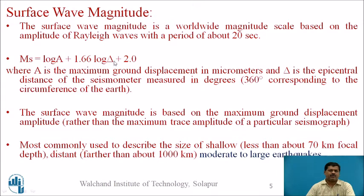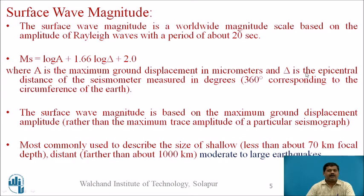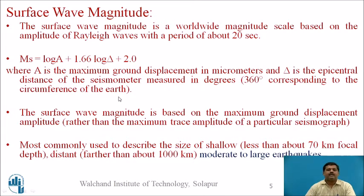The formula for surface wave magnitude is: Ms = log A + 1.66 log Δ + 2, where A is the maximum ground displacement in micrometers and Δ is the epicentral distance of the seismological station measured in degrees — 360° corresponding to the circumference of the Earth.